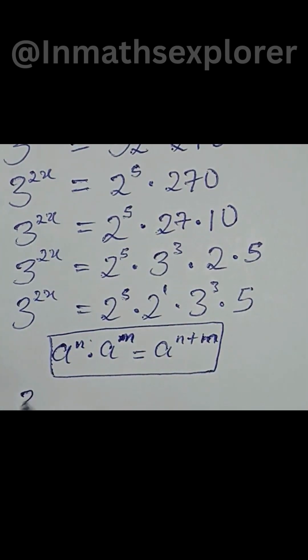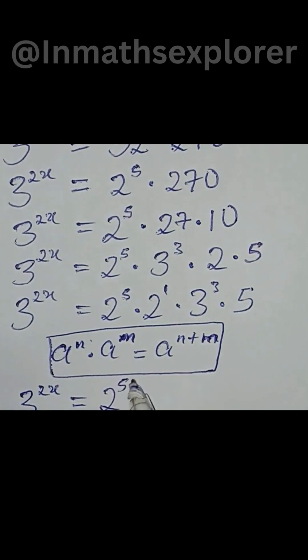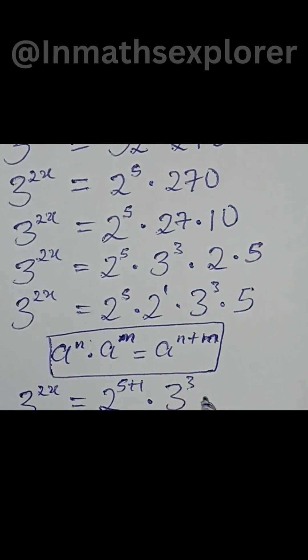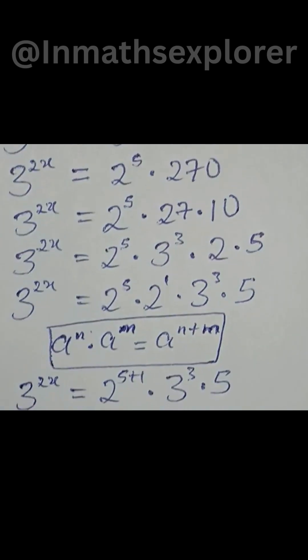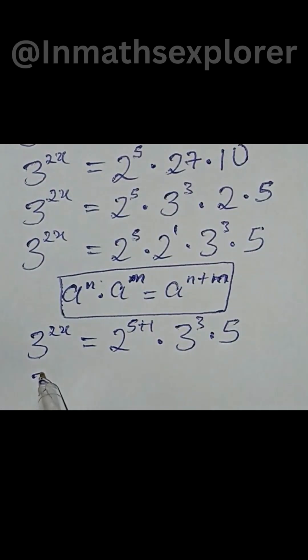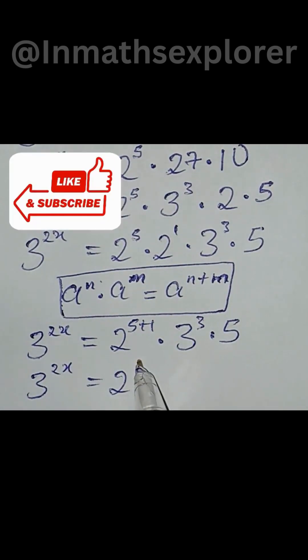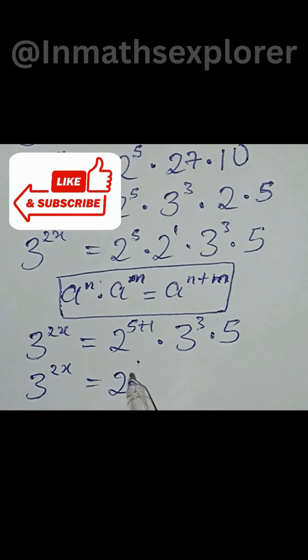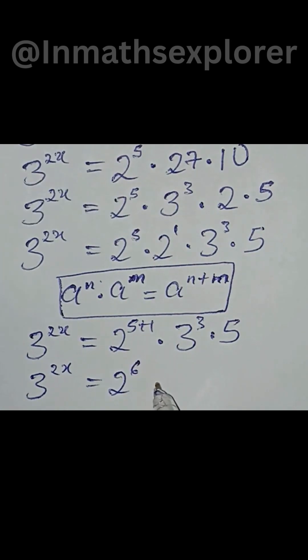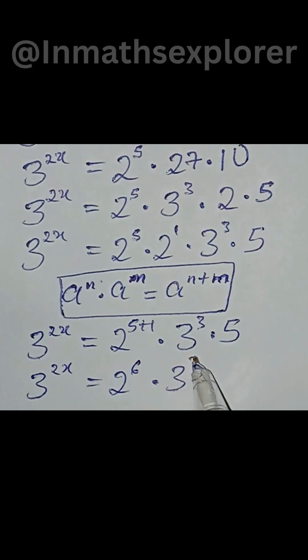Applying this identity, we have 3 to the power of 2x is equal to 2 to the power of 5 plus 1, multiplied by 3 to the power of 3, multiplied by 5. This gives us 3 to the power of 2x is equal to 2 to the power of 6, multiplied by 3 to the power of 3, multiplied by 5.